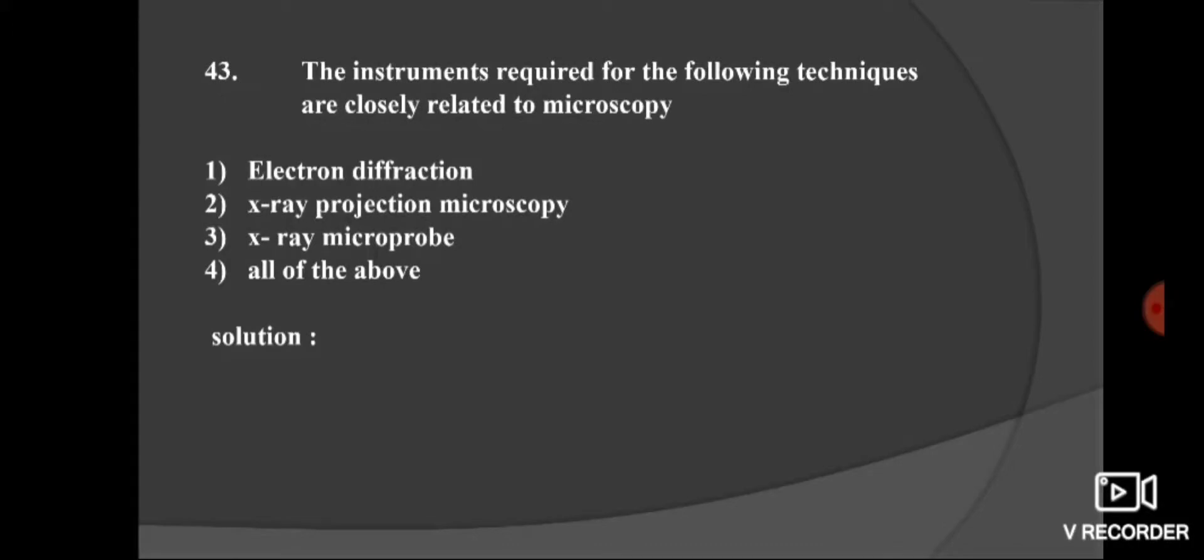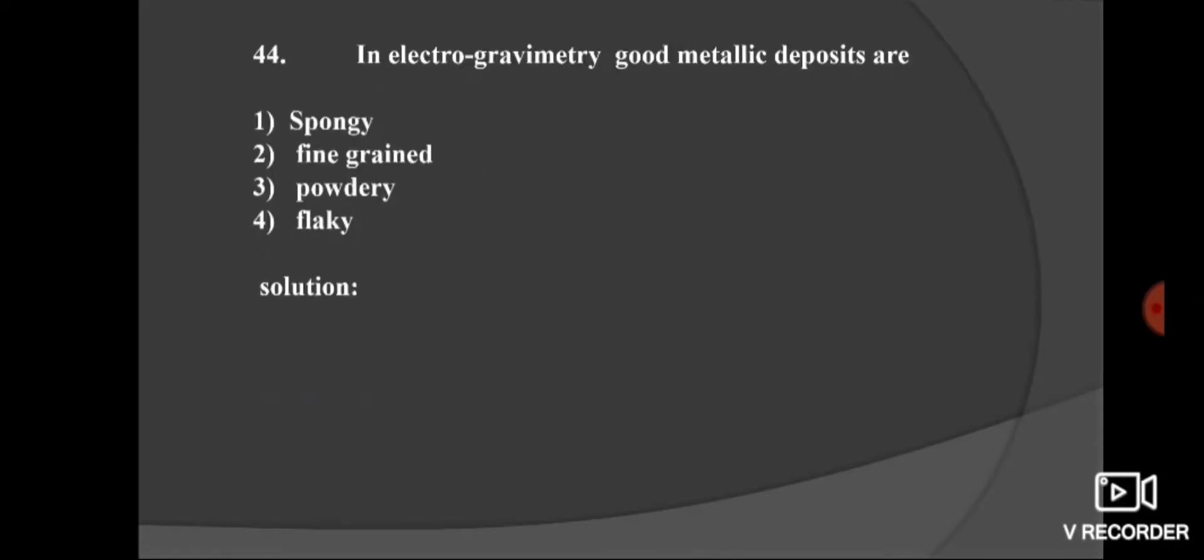Next question. The instruments required for the following techniques are closely related to microscopy: option 1, electron diffraction; second, x-ray projection microscopy; third, x-ray microprobe; and 4, all of the above. Here, instruments required which is closely related to microscopy are all of the above.